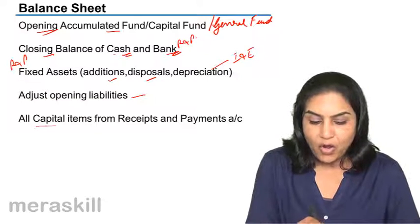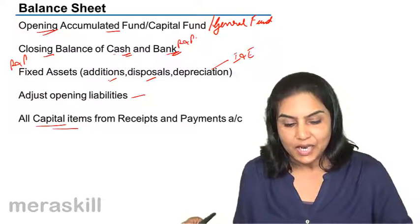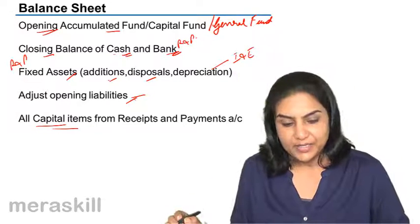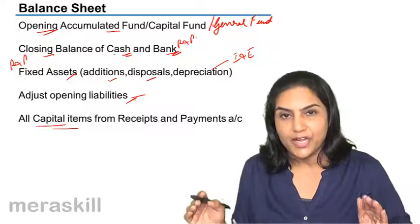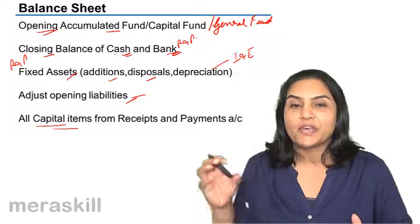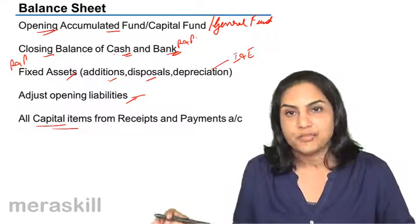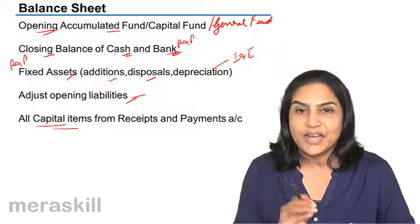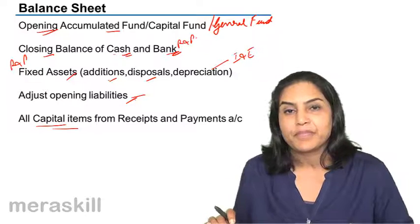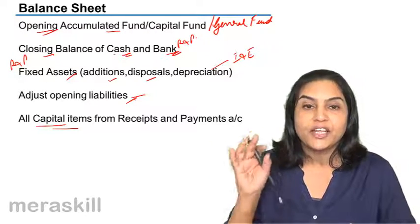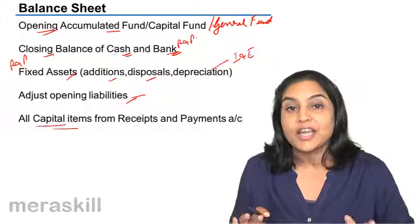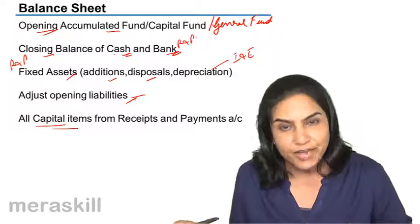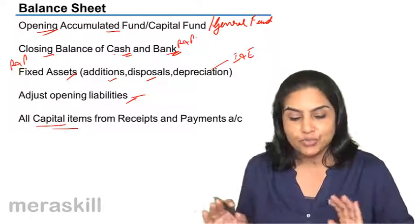We look at all capital items from the receipts and payments account — whether assets or liabilities. So, for the balance sheet, you begin with an opening balance sheet. The opening accumulated fund is brought forward, the closing balance of cash and bank is brought forward from the receipts and payments, and all movements — all capital items, whether assets or liabilities — are taken care of. Opening liabilities present in the opening balance sheet, if there has been no adjustment in the receipts and payments, may find a place in the closing balance sheet, and such adjustments need to be looked into.